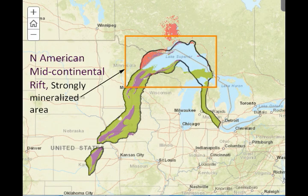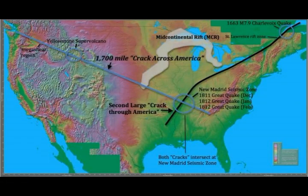I wanted to make this video because we have to keep this in mind when we have all these earthquakes in the Midwest, in the central United States. It's not just fracking — they're too big to be fracking. A 3.5 or 3.0 magnitude is not fracking. According to the USGS tectonic summary, most of North America east of the Rocky Mountains has infrequent earthquakes, but they make no mention at all of kimberlite volcanoes, the mid-continental rift, or any type of volcanoes.